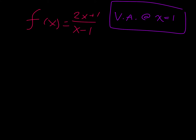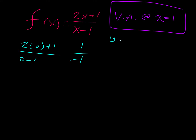Now, to find the axis intercepts, we have to plug in 0 for the x's. So 2 times 0 plus 1 over 0 minus 1 — that's going to be 1 over negative 1. And so we have a y-intercept at negative 1.